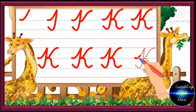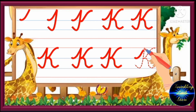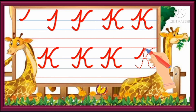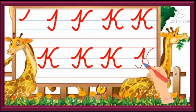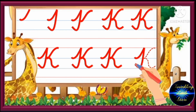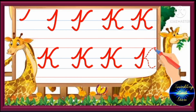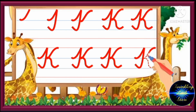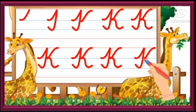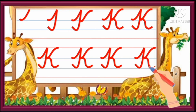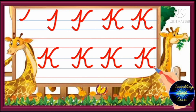Draw a half up curve. Draw a slant line then an up curve. Draw a little down curve then a slant line. Draw a half down curve then a half up curve.